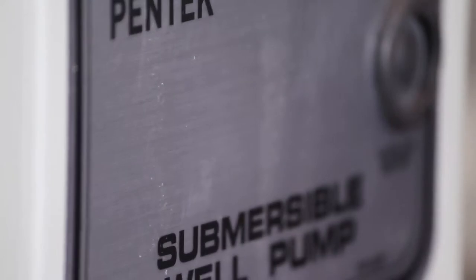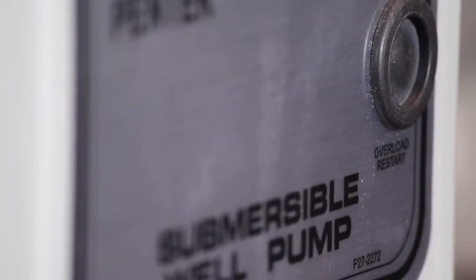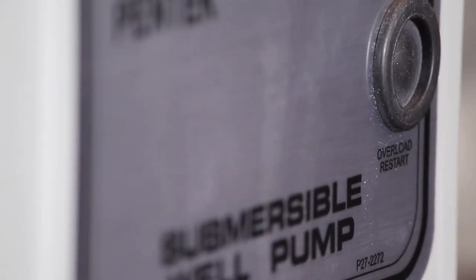The through-the-cover overload reset button feature on one and a half to five horsepower models allows the motor to be restarted after a system irregularity is cleared.